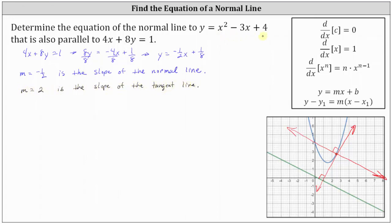Because the derivative function values of y equals x squared minus 3x plus 4 give us the slopes of the tangent lines, we will set the derivative of y equals x squared minus 3x plus 4 equal to 2 and then solve for x. So y prime equals 2x minus 3, and now we'll set this equal to 2 and solve for x.